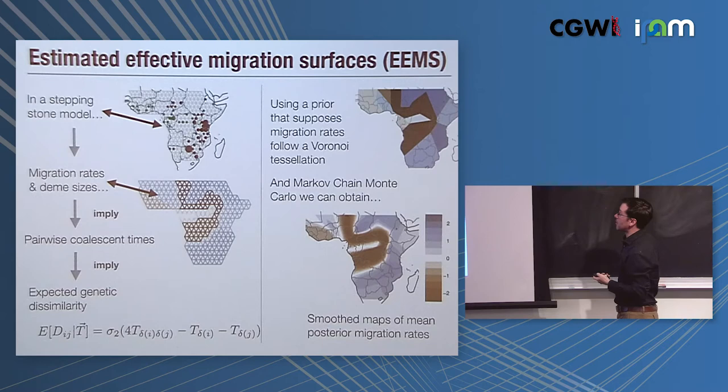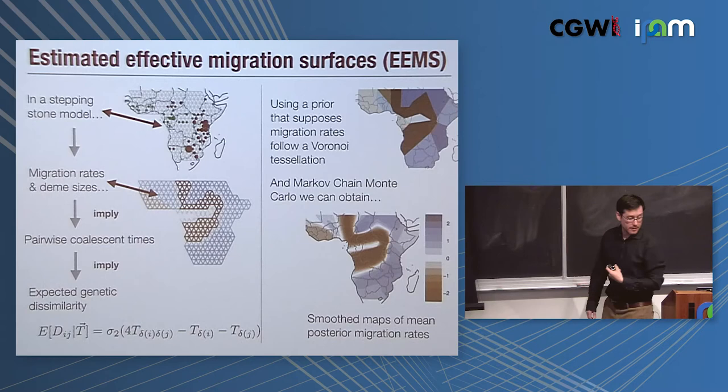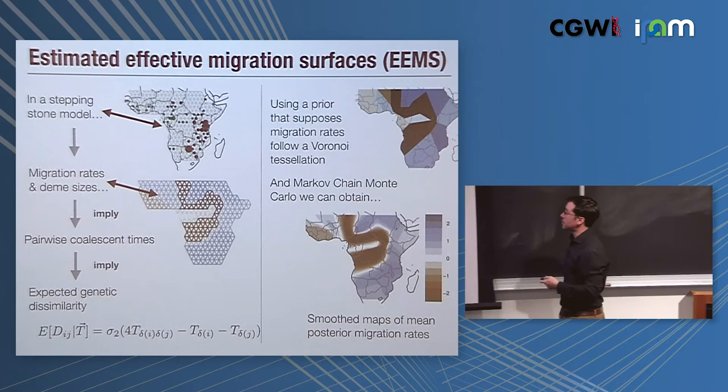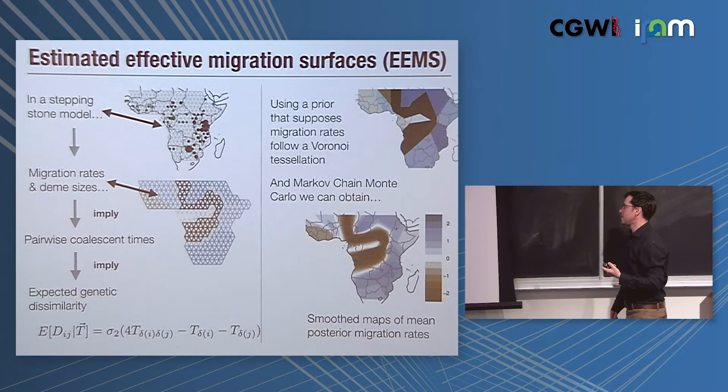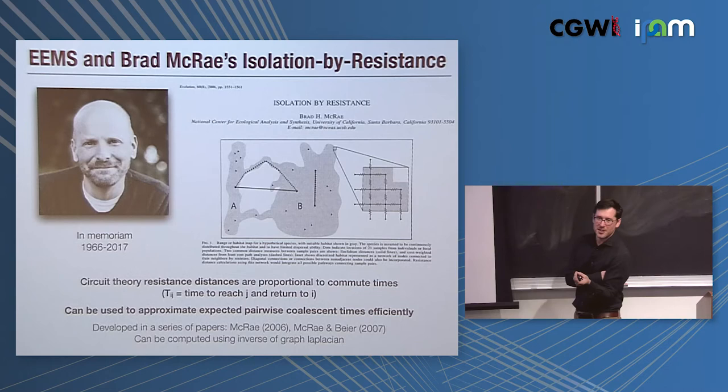What we do this formally is with a Markov chain Monte Carlo that's exploring different sets of migration rates over space and population sizes over space, and then returns these smooth maps that represent the posterior mean migration rate. Under the hood, calculating the pairwise coalescent times exactly is actually computationally costly, so we use this approximation based on something called resistance distances, which are an idea that was developed by Brad McRae. He was an electrical engineer who wanted to do something more meaningful with his life, changed into conservation biology and genetics.